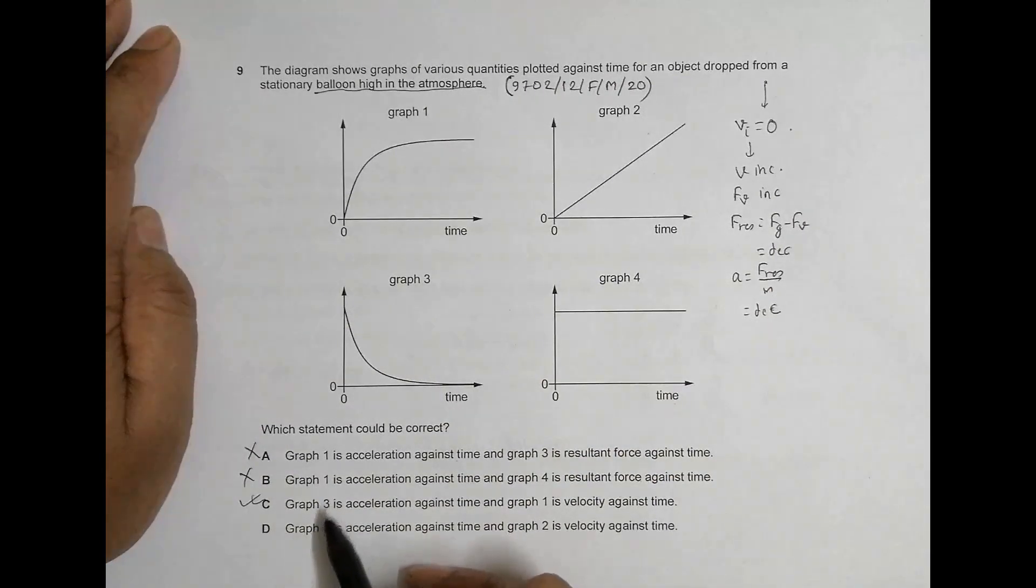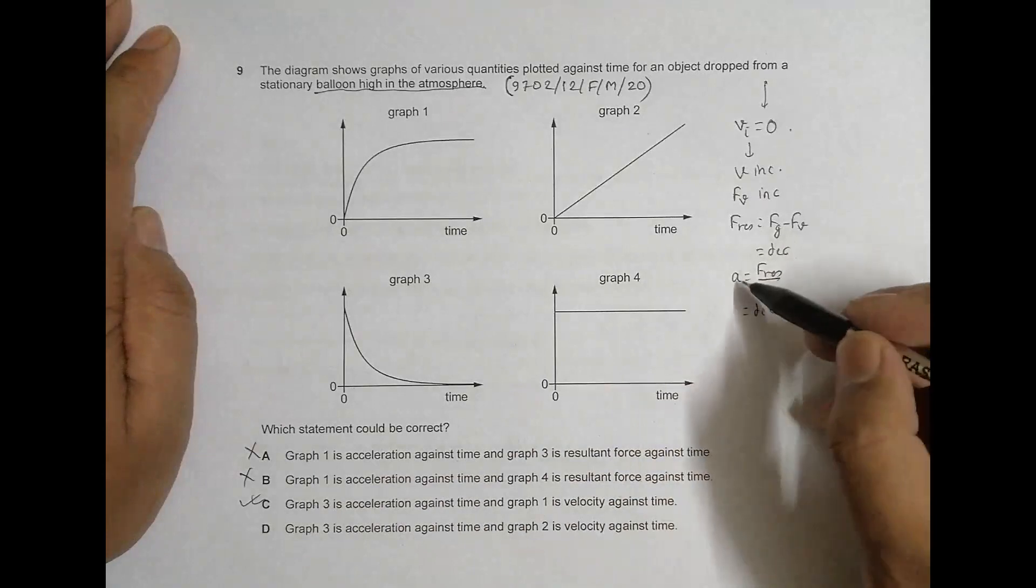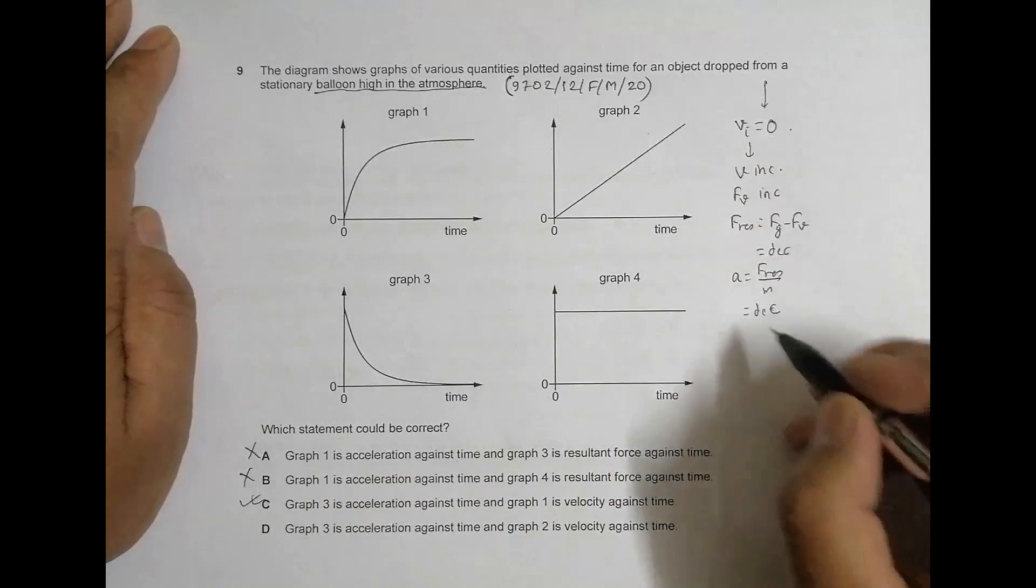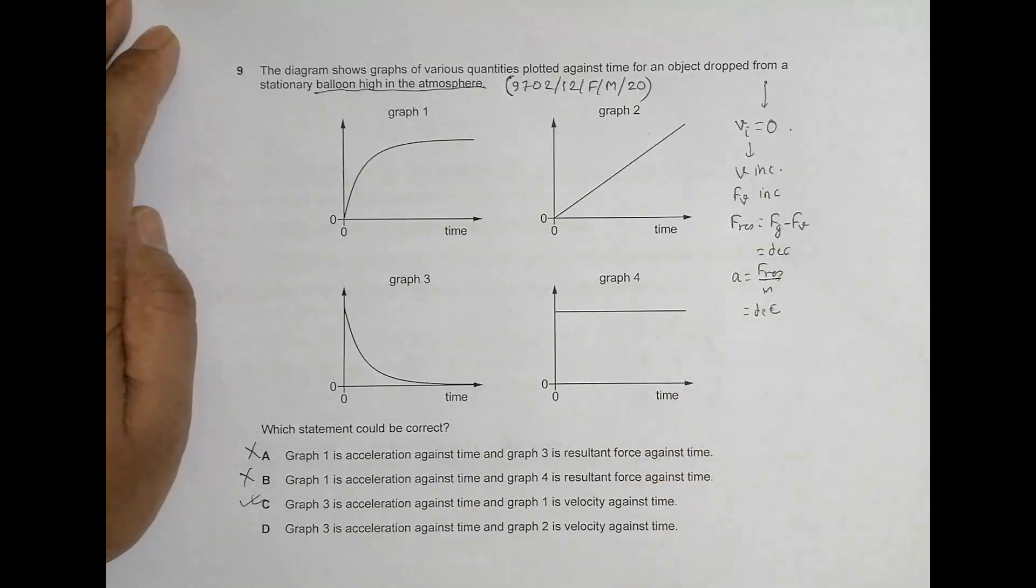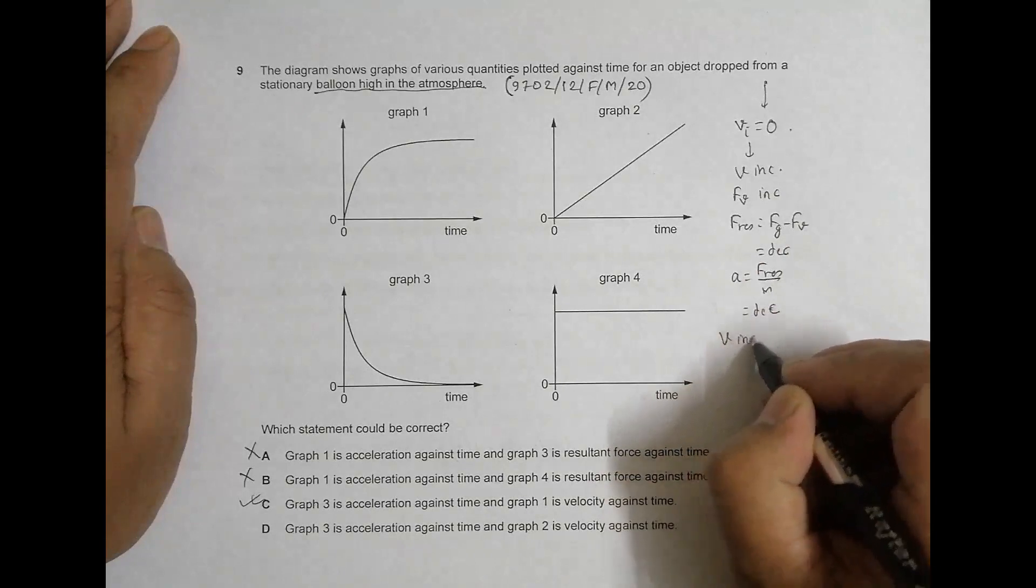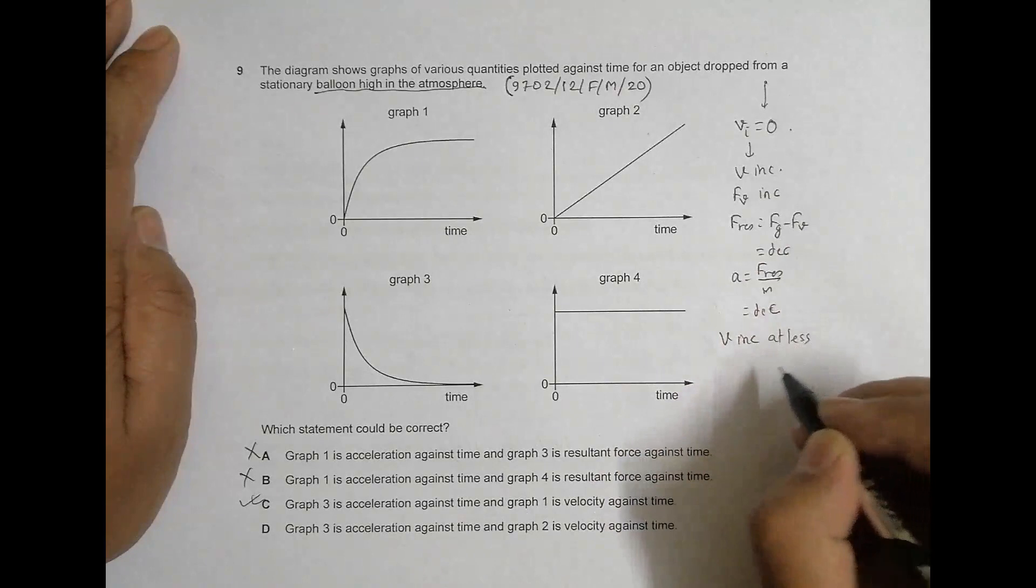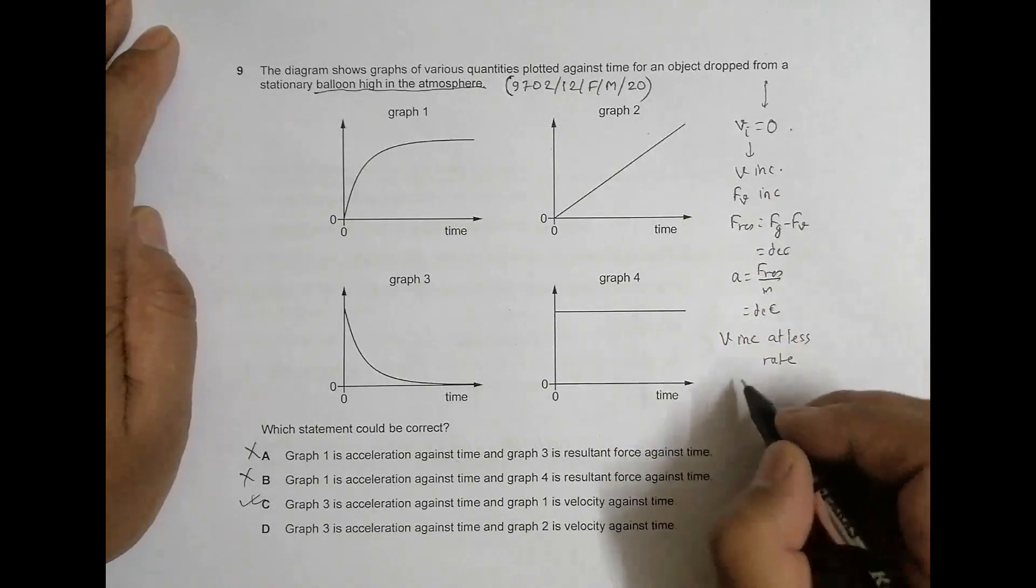Both C and D could be correct. Now what happens here is if this a decreases, now v increases. A decrease means v still increases but at less rate, v still increases but at less rate.